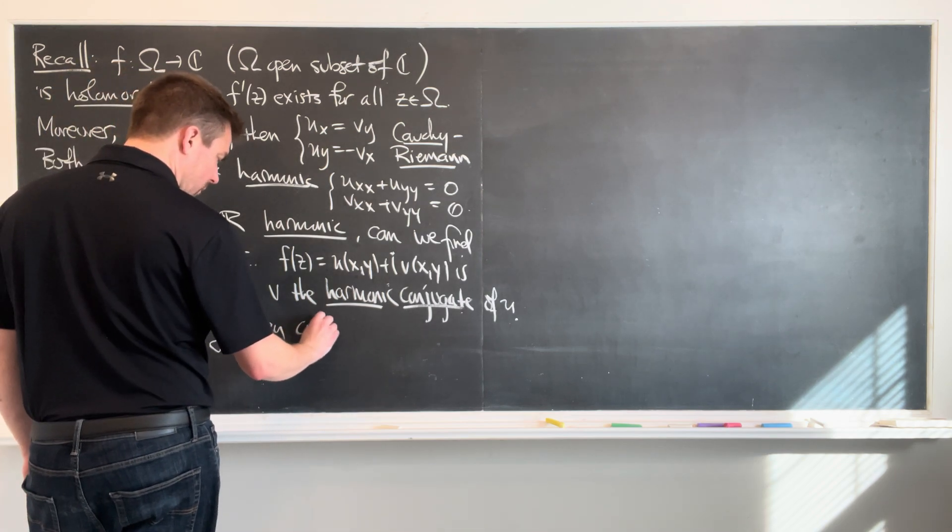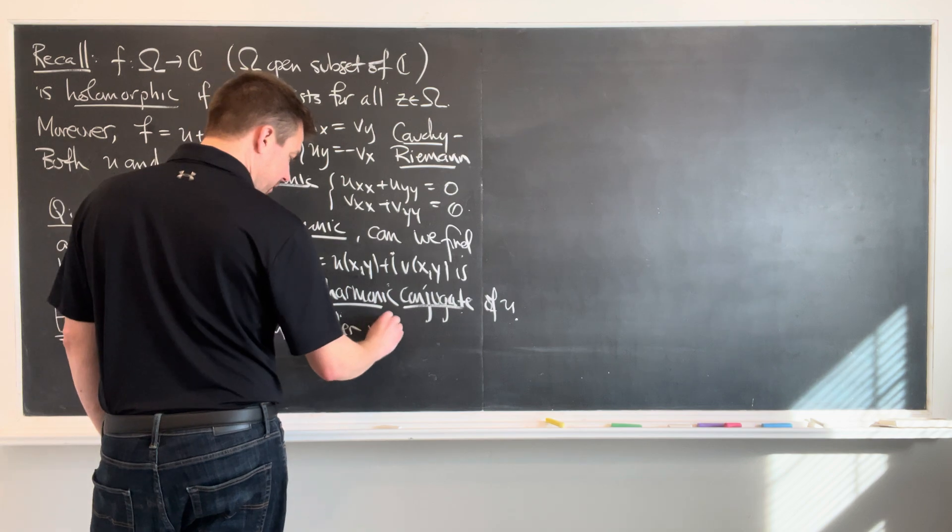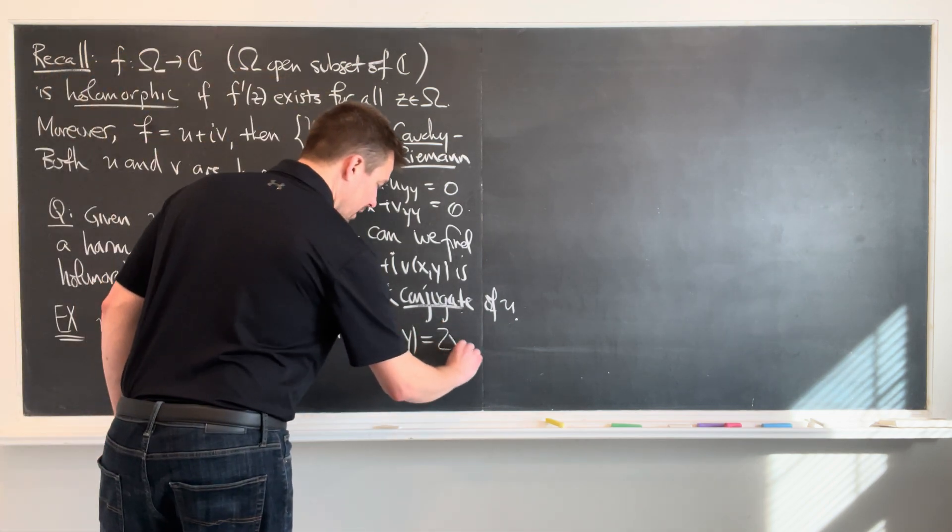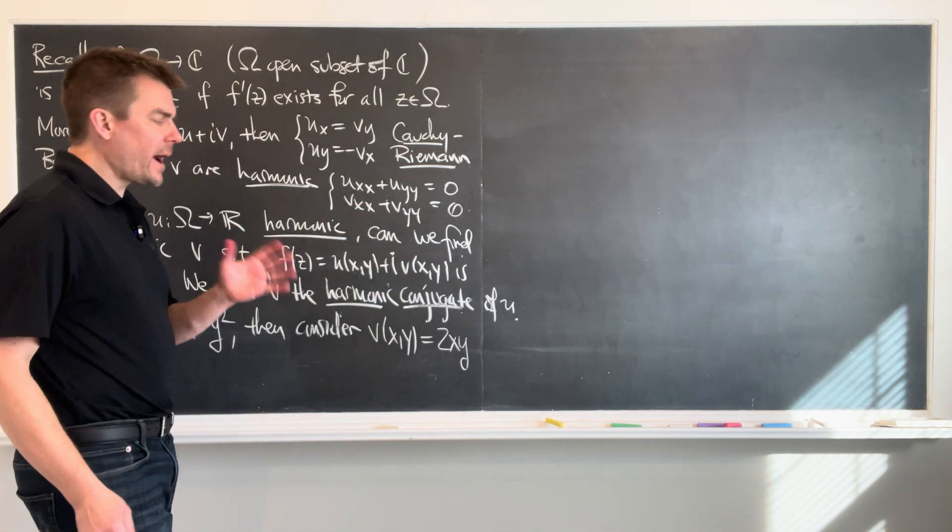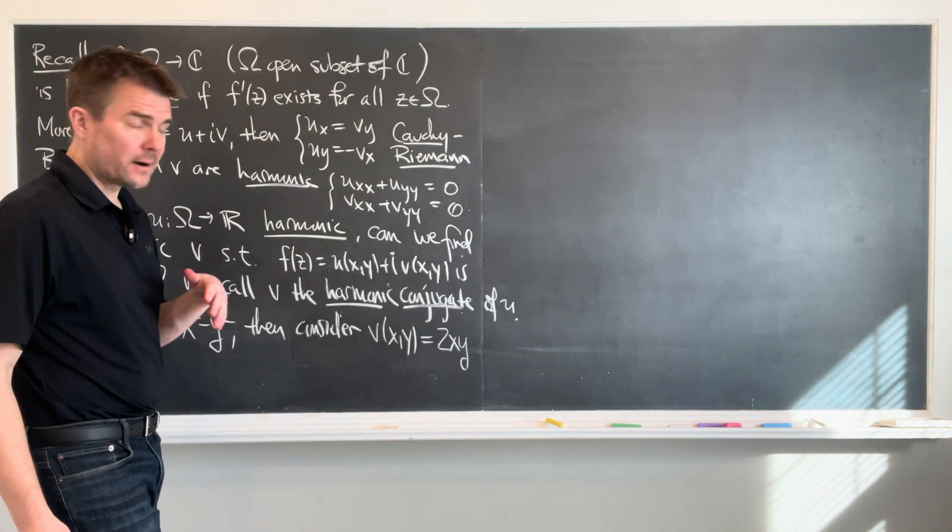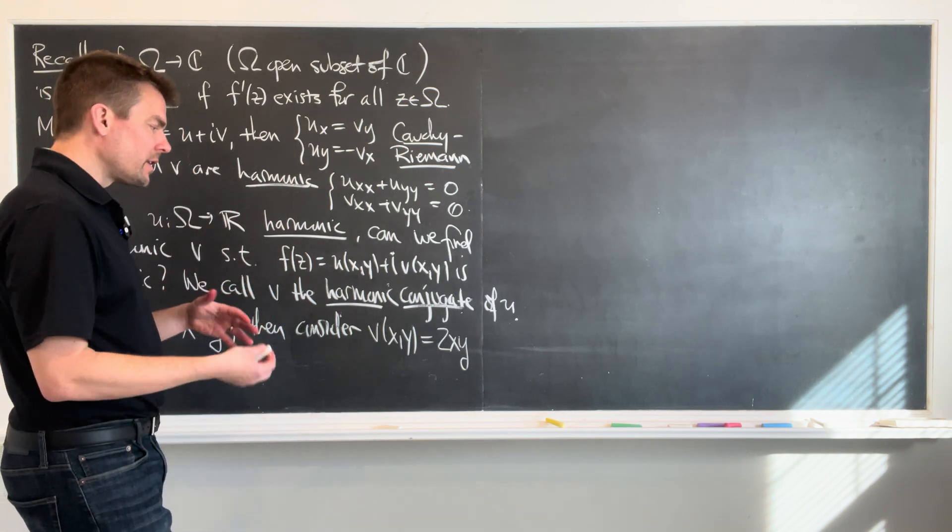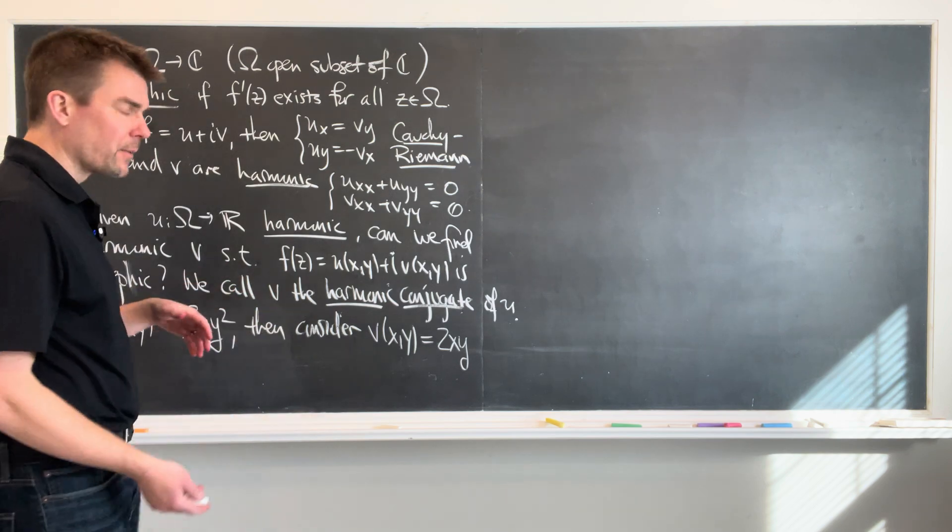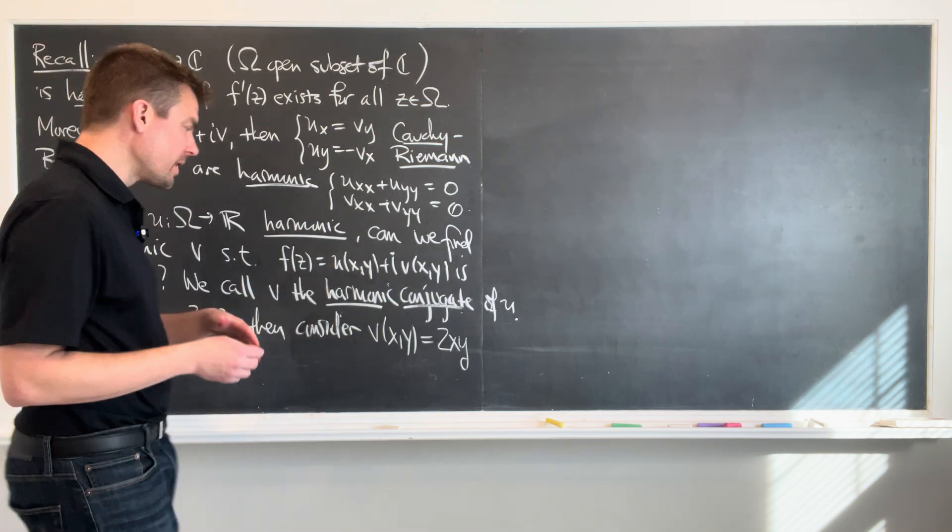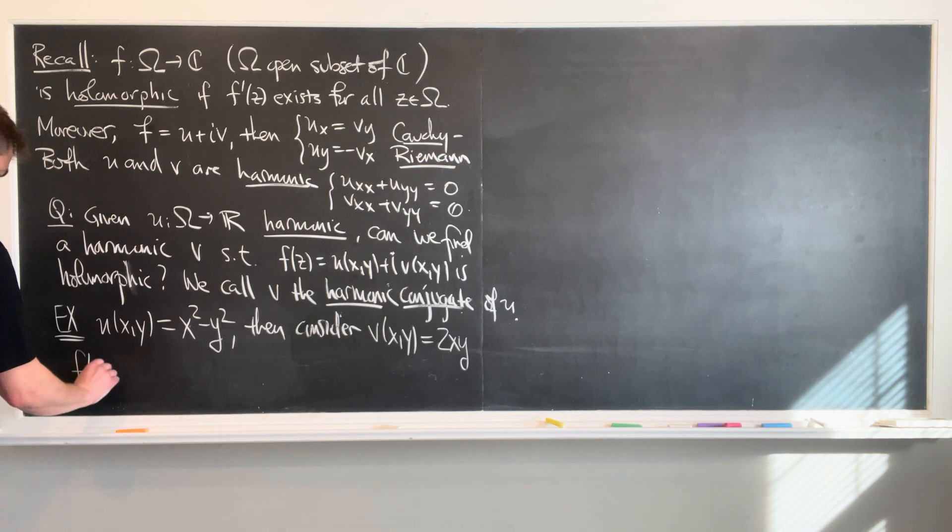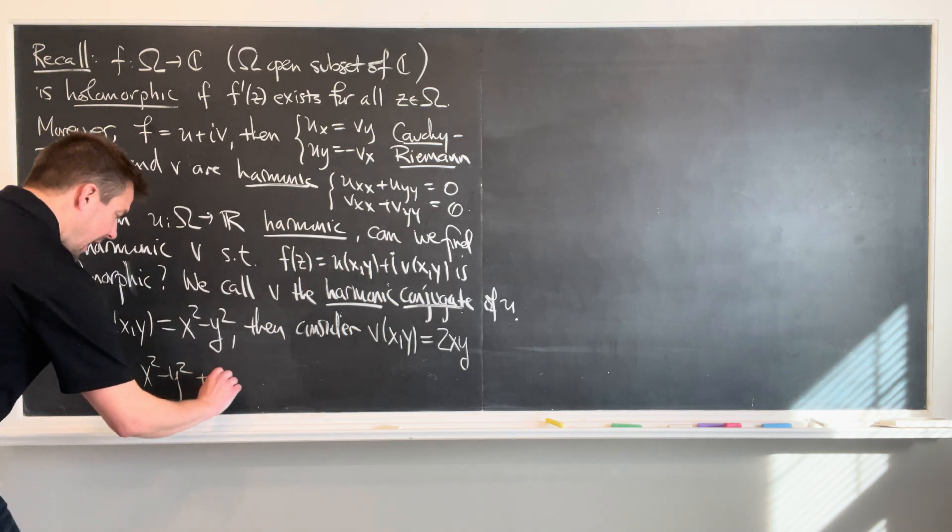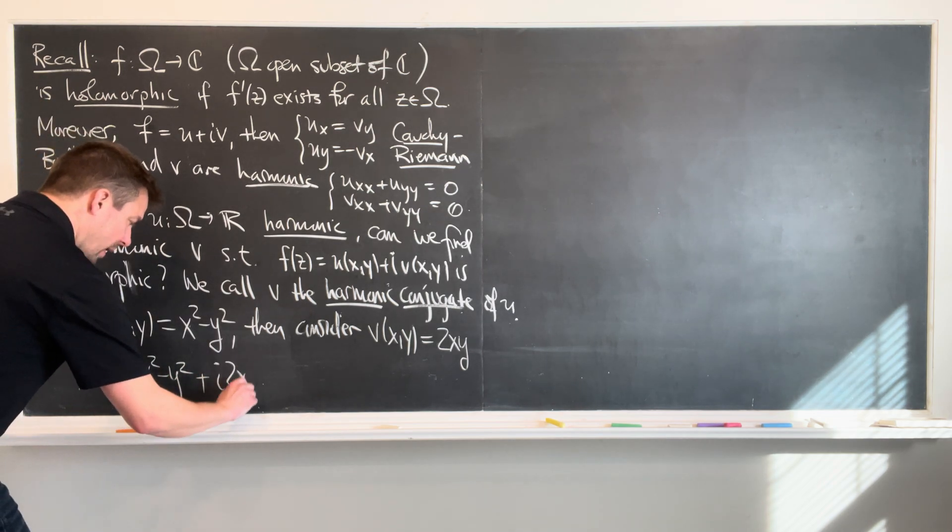Then consider the function v of x, y which is just going to be twice x, y. Now you might say, why am I picking that function seemingly out of thin air? And the answer is that we already have seen how we can expand powers of z into x's and y's. And I know that that one is going to come from z squared. So in particular, if we look at this function f of z, of course z is x plus iy, which is going to be x squared minus y squared plus i times two xy.